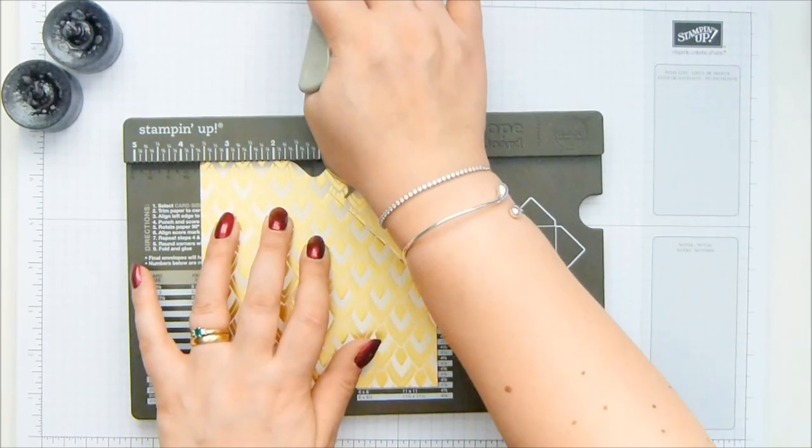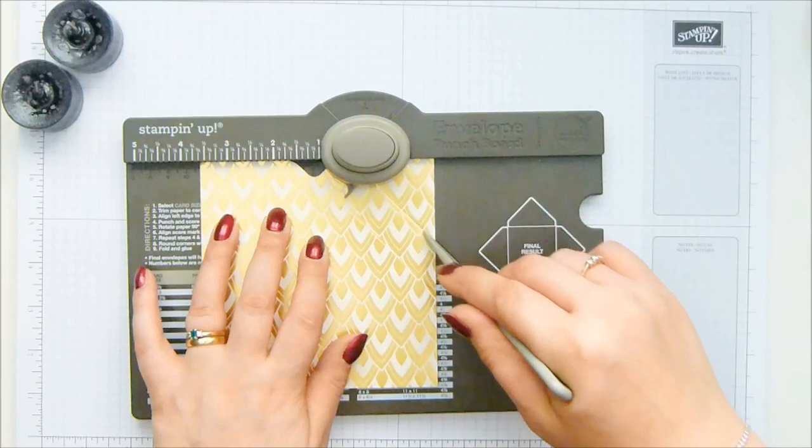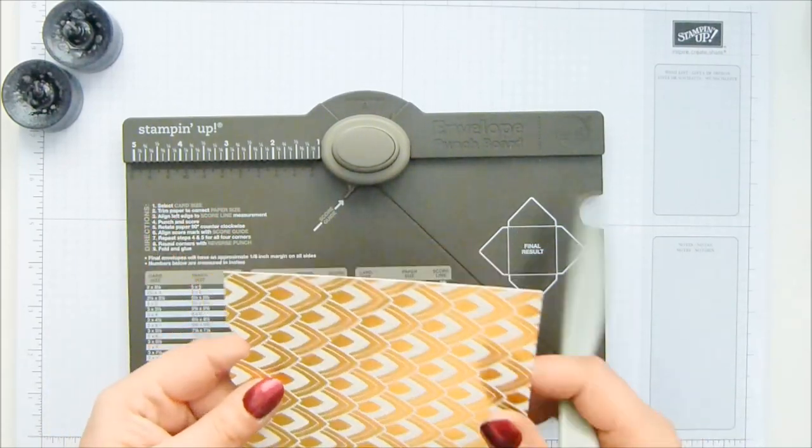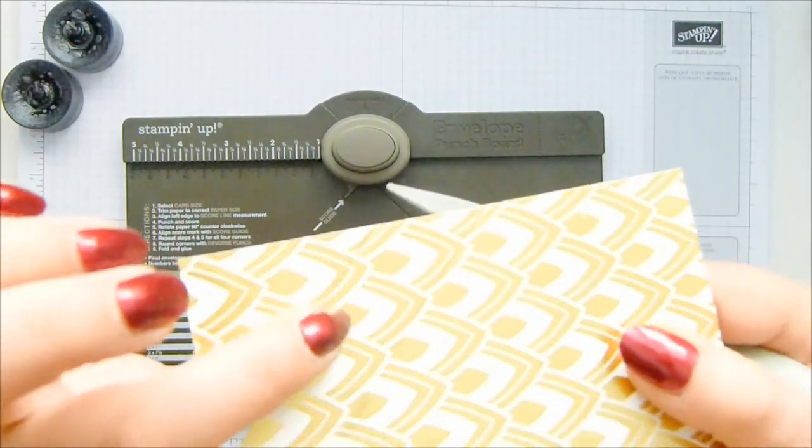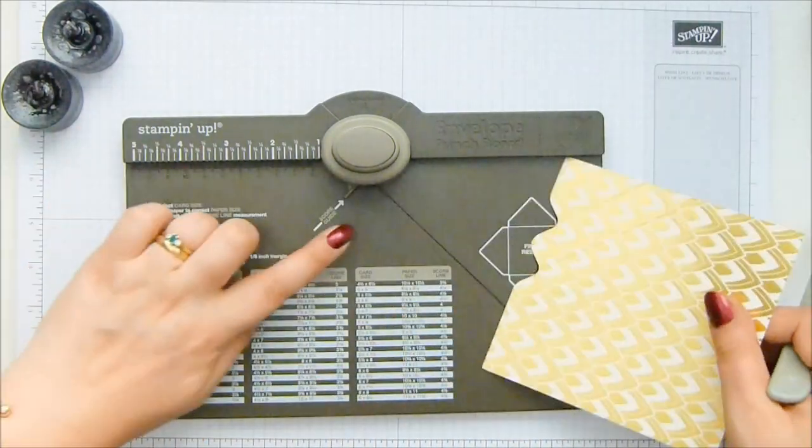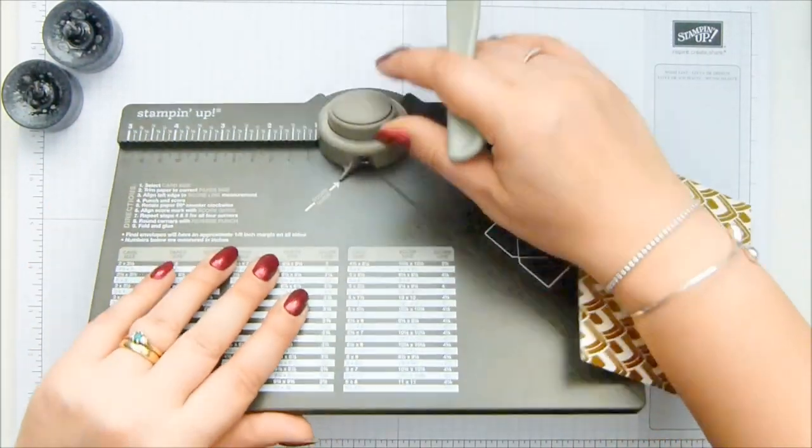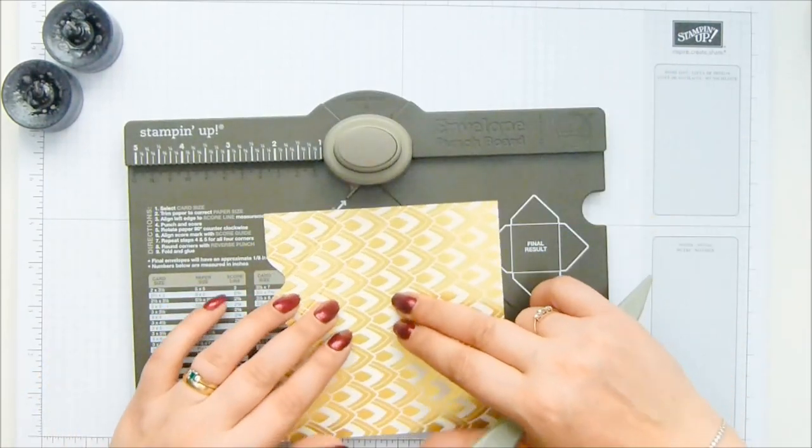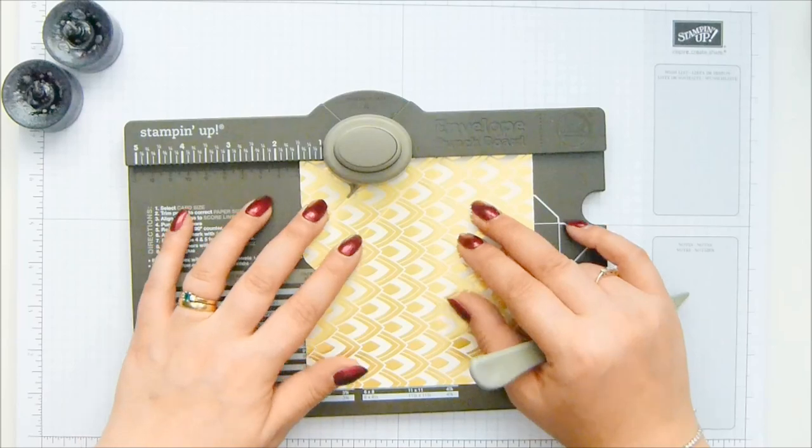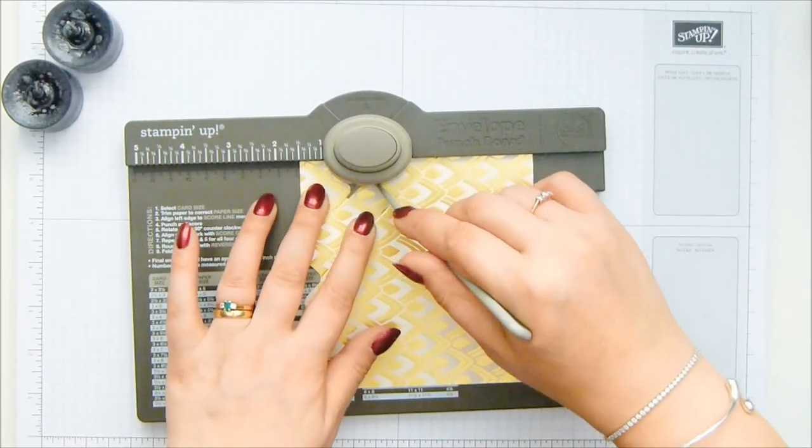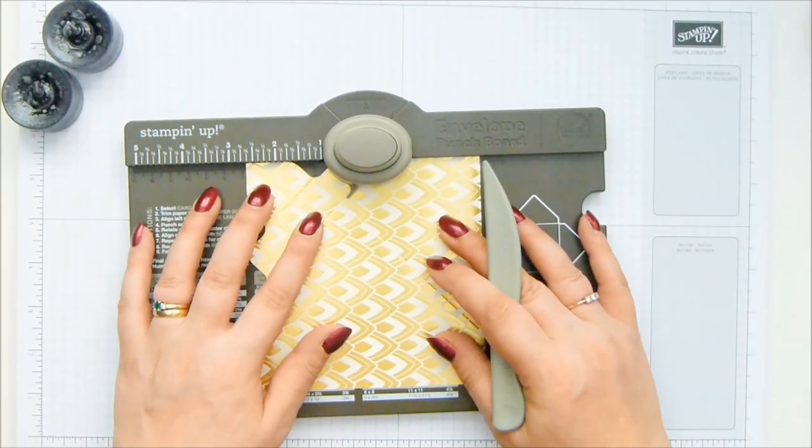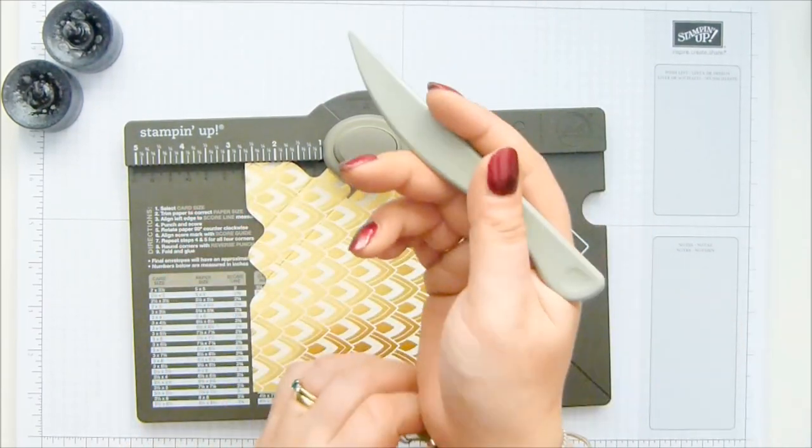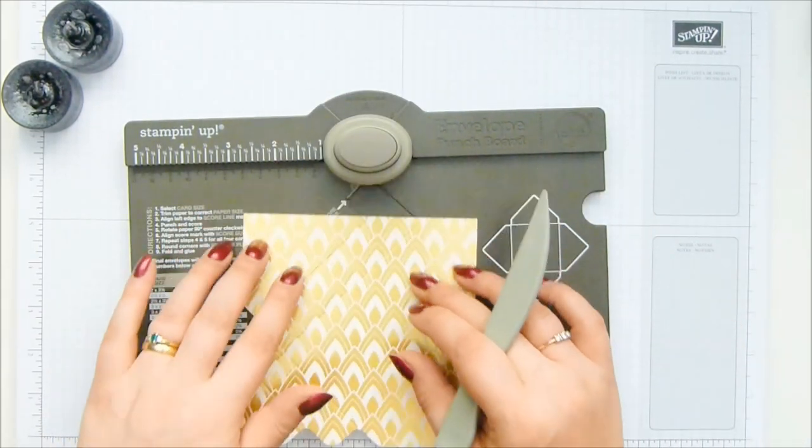So you punch your score. After that, don't worry about the measurements. You're going to use that score line that I've just created and marry it up to this little bit that sticks out. This is called a score guide, and you just line it up to there, and then you punch and score all the way around. You just keep repeating that all the way around, punching and scoring.